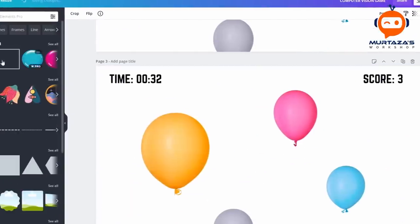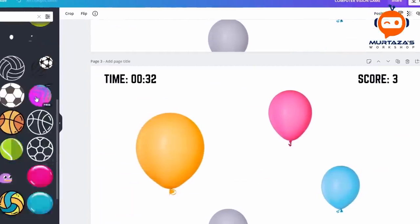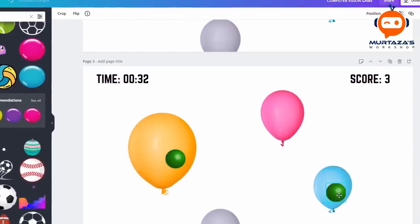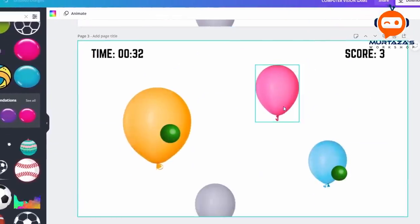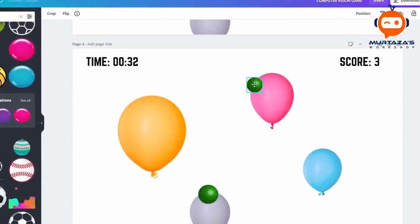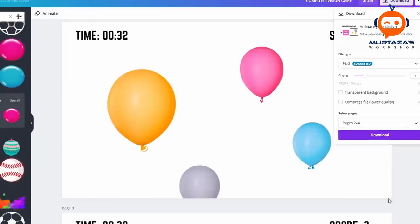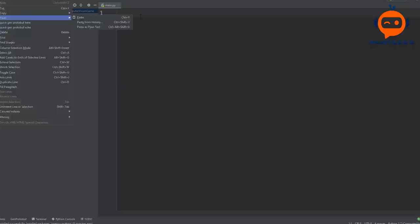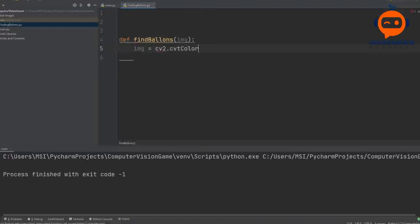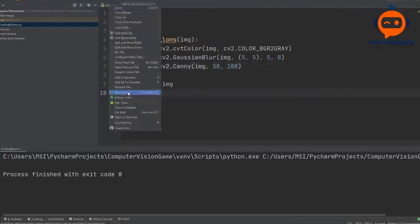For testing, I created a few images that had a few balloons with the hit and a few balloons without the hit. This would allow us to test without actually implementing the setup of the projector and the camera. This whole process took about one hour to complete. So now it was time to put on the nerdy glasses and start typing the code.